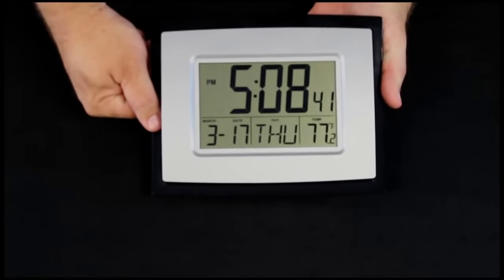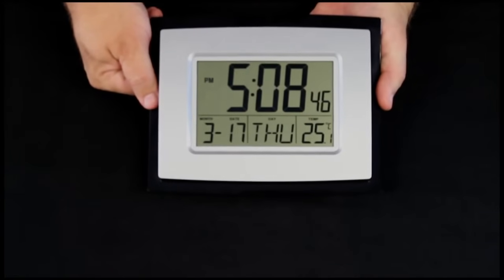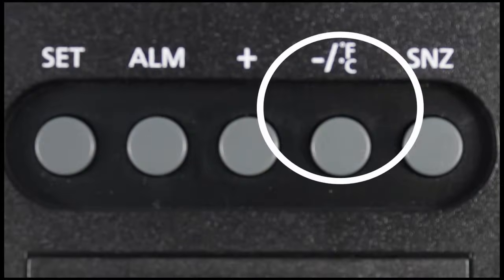If you wish to have Celsius instead of Fahrenheit and temperature down in the corner, you just press the FC button, and we can change back and forth between the two.